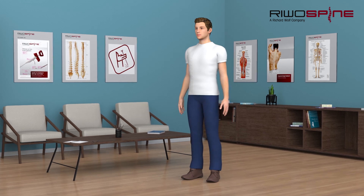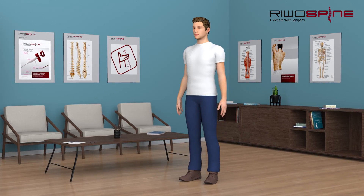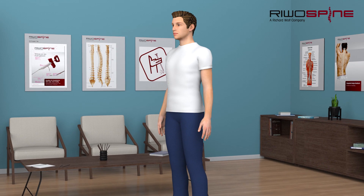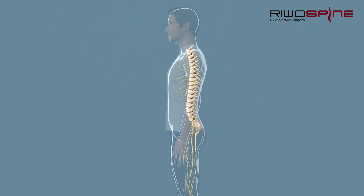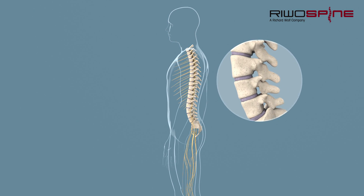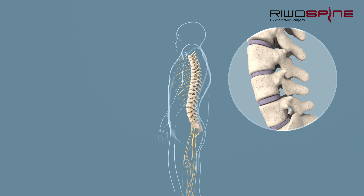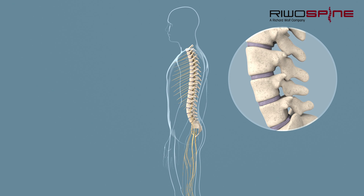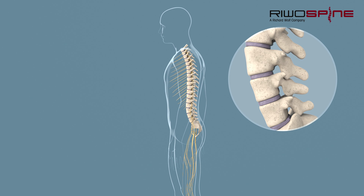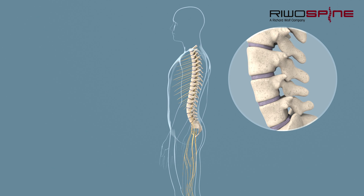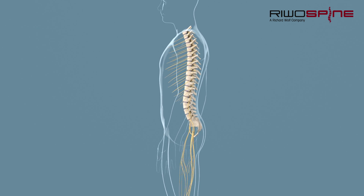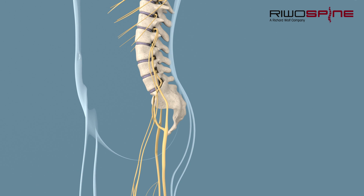Due to its anatomical structure, the human spine allows enormous freedom of movement and is at the same time the center of the musculoskeletal system. The intervertebral discs of the spinal column play an important role in this. As a connection between the individual vertebral bodies and due to their soft structure, they are an important component of the function of the spinal column. Various causes can promote wear and tear of certain structures or lead to certain pain symptoms of the spinal column.